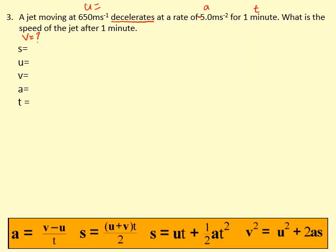So if we fill the SUVAT in, we're not interested in S. So cross that out because we don't have it and we're not interested in it. U is 650. V is what we're trying to find. A is minus 5. T is one minute, but we need to turn that into seconds. So times it by 60 to get 60 seconds. The equation without the S in it is this one here. So I'm going to write that out.